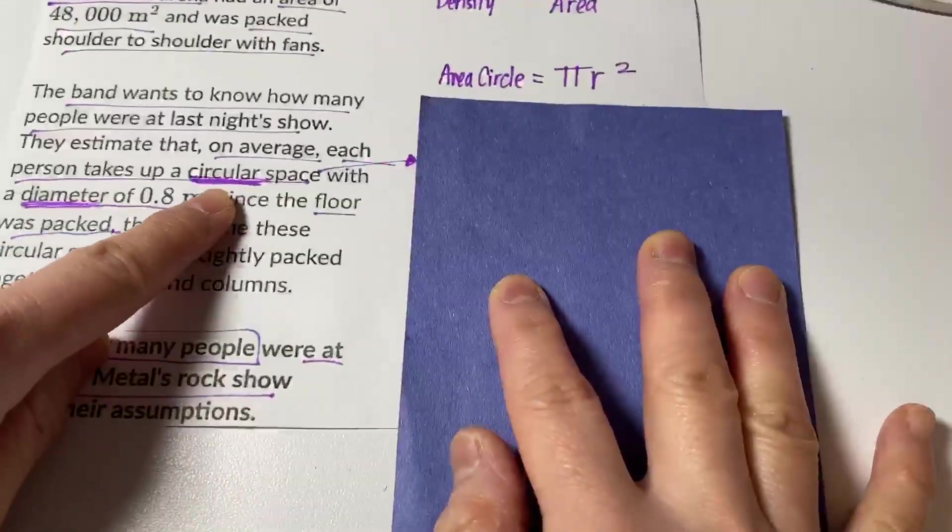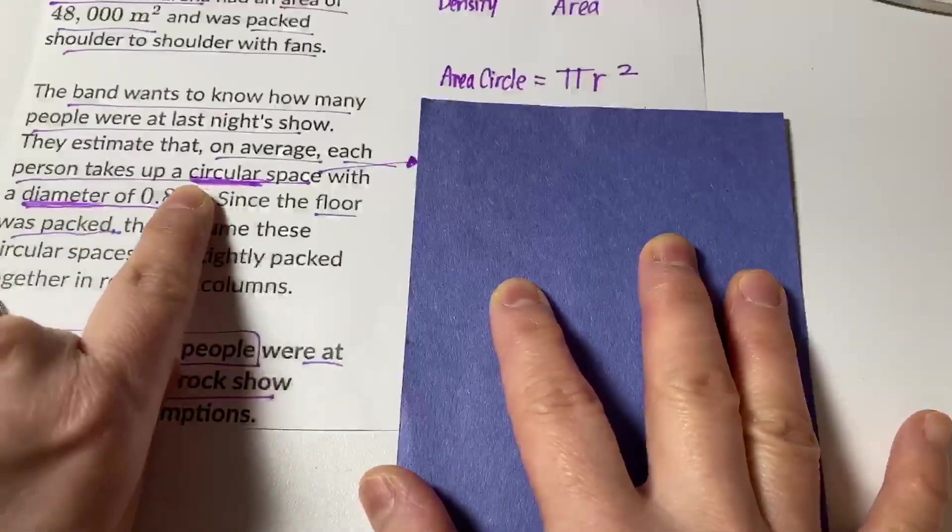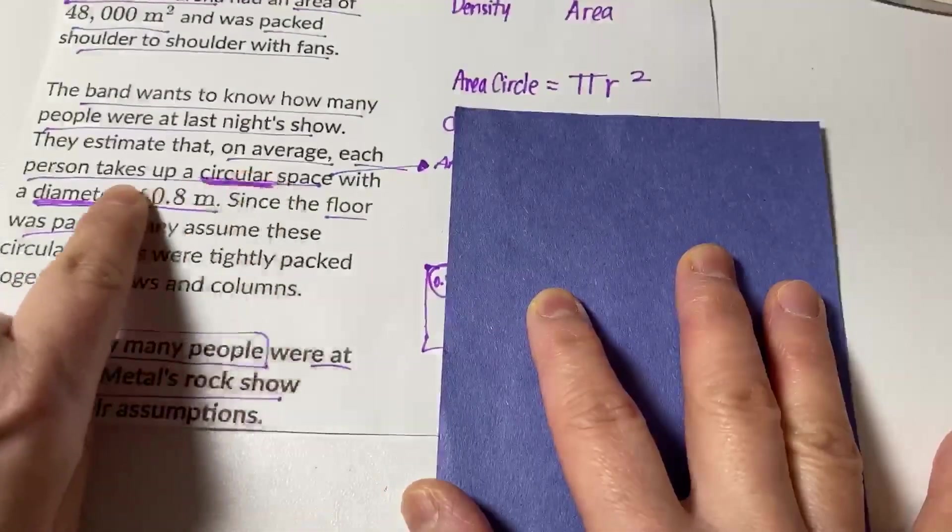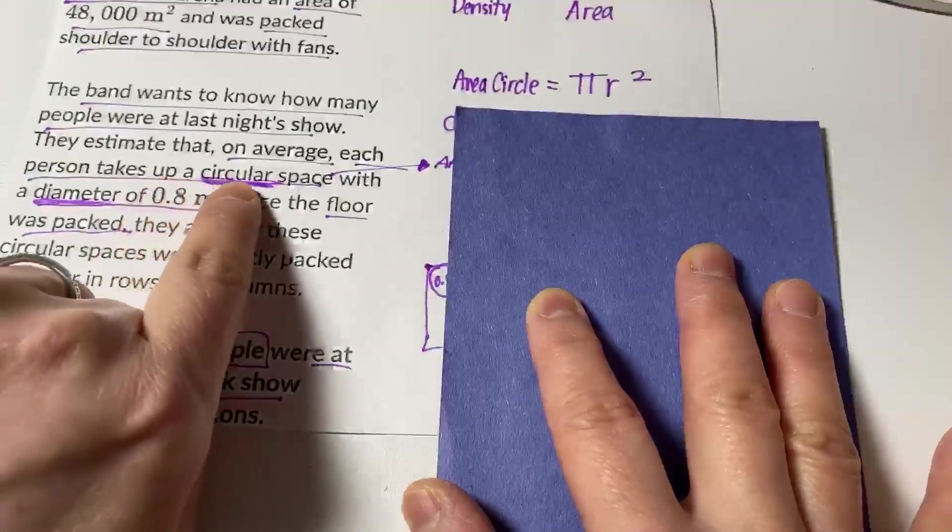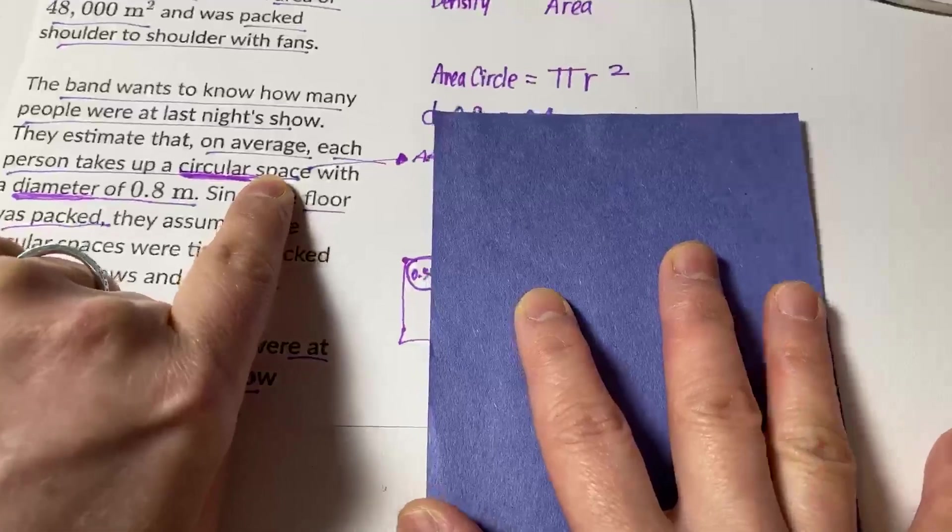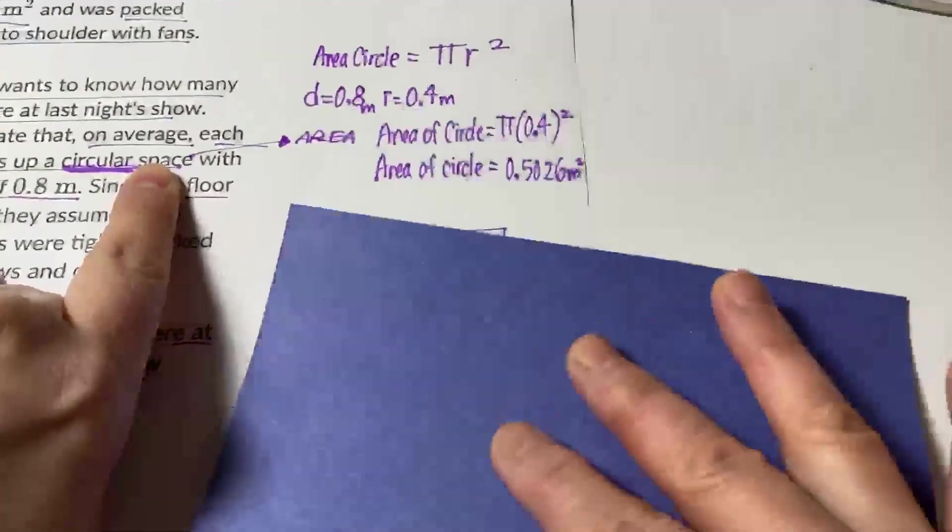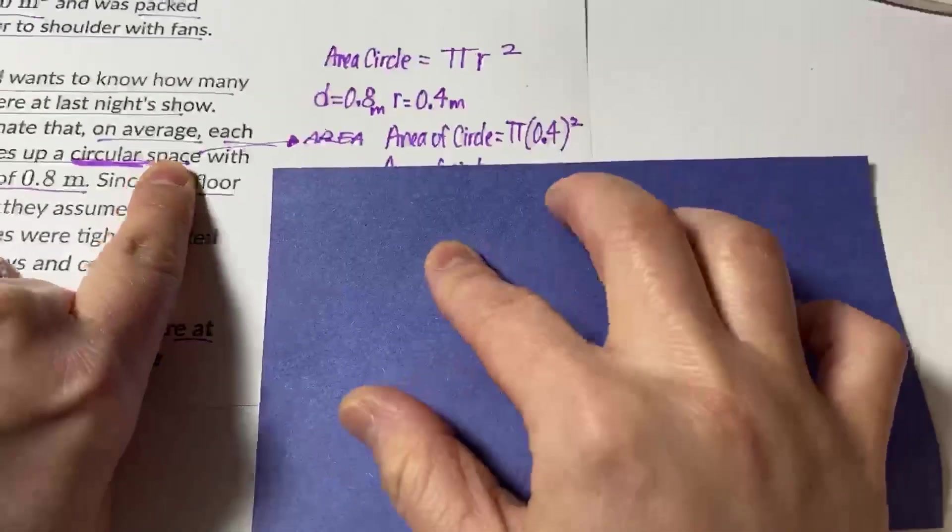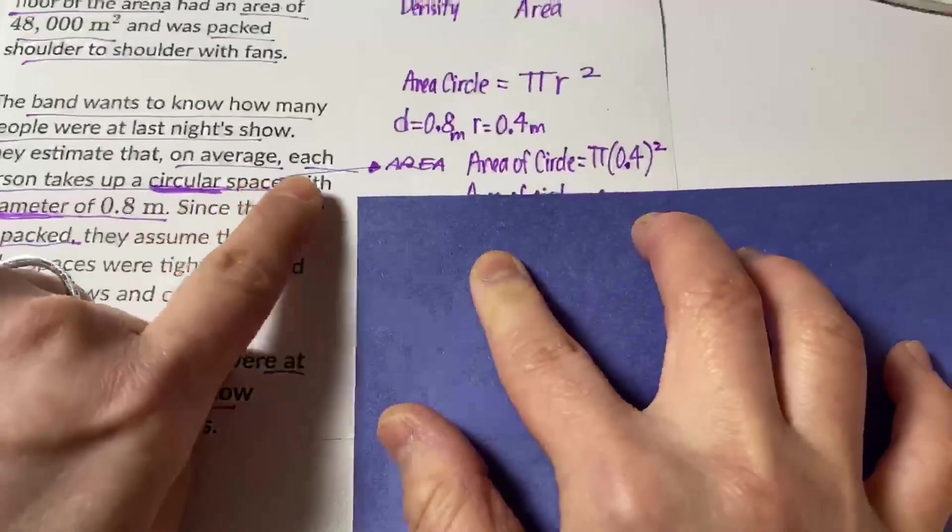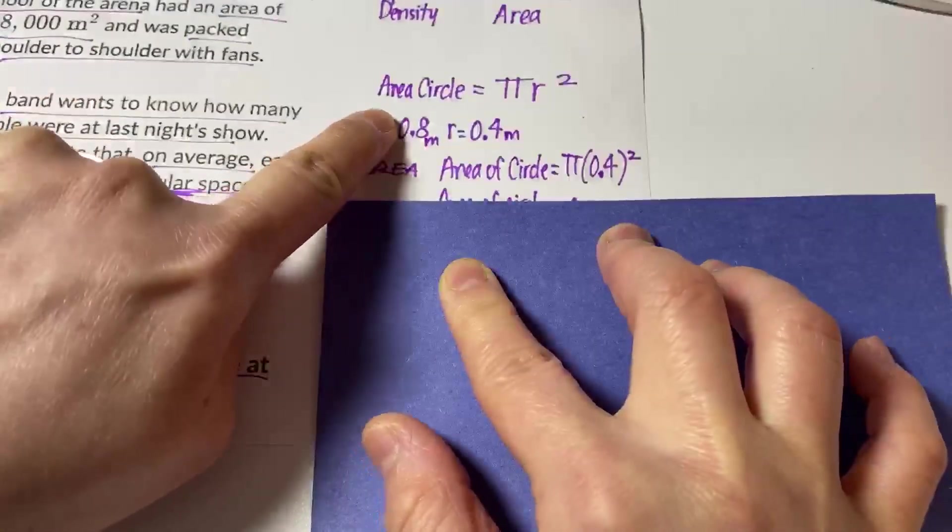Now, first of all, you have to understand that on average, each person takes up a circular space. Space is another word for area. And so therefore, we want to find the area of the circle.